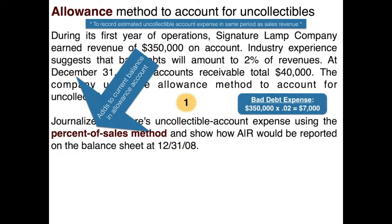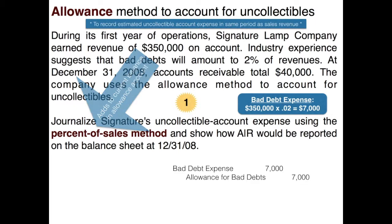Let's look at the journal entry for our bad debt expense of $7,000. We debit bad debt expense and credit the allowance account. Remember, the allowance account is a contra asset, so it increases with credits, and we need to book that expense to reduce taxable income. Bad debt expense is debited for $7,000, and allowance for doubtful accounts — or allowance for uncollectible accounts — is credited for $7,000.